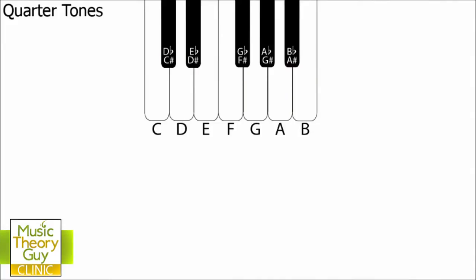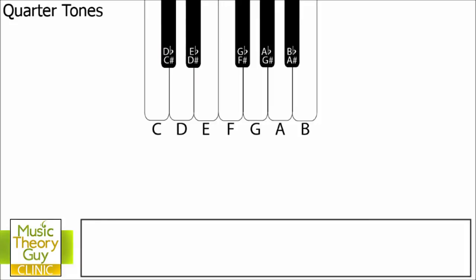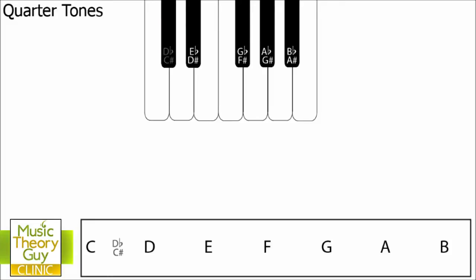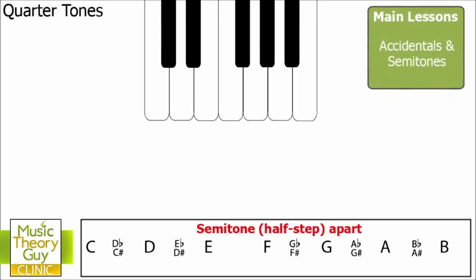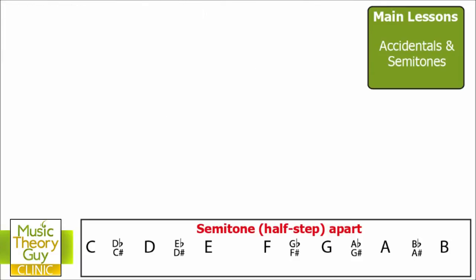On the screen is a standard, albeit very small, keyboard. I'm going to move all of the white notes to the bottom of the screen: C, D, E, F, G, A, and B. I'm now going to move all of the black notes between the notes where they would appear on the keyboard — D flat and C sharp between C and D, E flat and D sharp between D and E, G flat and F sharp between F and G, A flat and G sharp between G and A, and finally B flat and A sharp between the A and the B. Now all of these notes are a semitone or a half step apart. If you're not sure why, have a look at my video on accidentals and semitones. It's really important you understand what semitones and half steps are before watching this video on quarter tones.